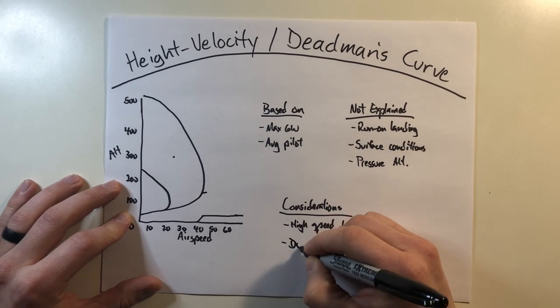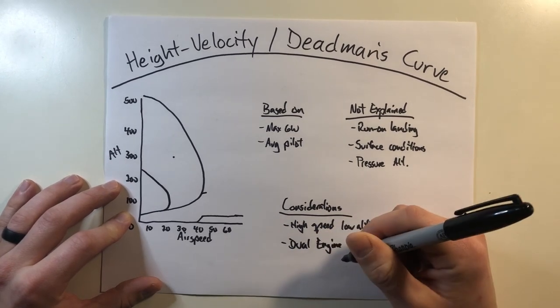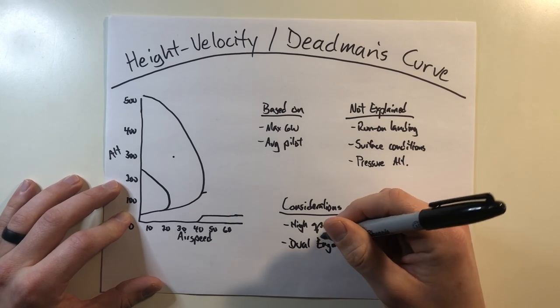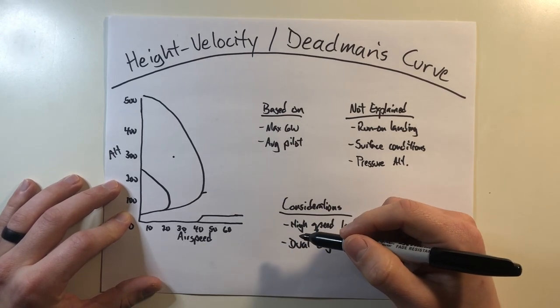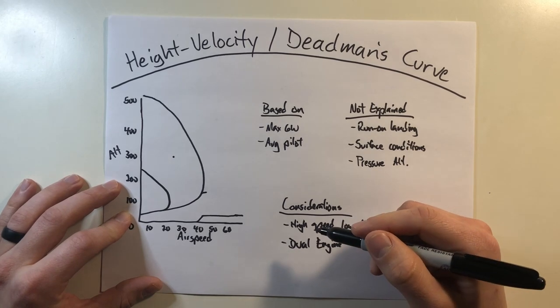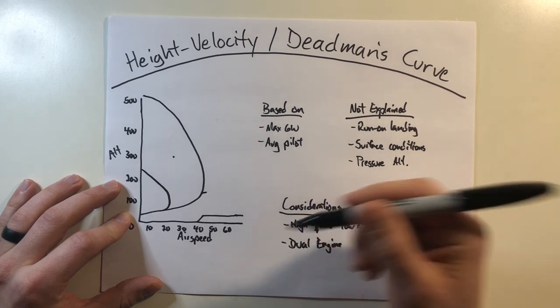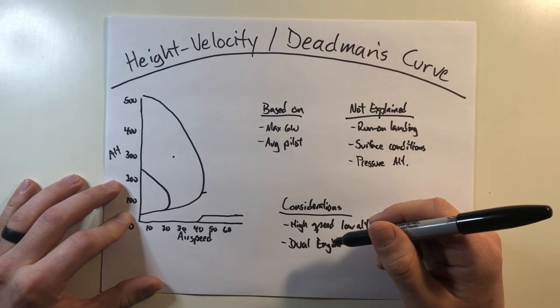So that covers the dual engine considerations. Last thing I want to cover for the considerations is that some federal regulations outline that intentionally operating in this avoid region is breaking an aircraft limitation and therefore should be avoided at all times. Now this usually applies to larger, heavier, multi-passenger helicopters and not so much your smaller commercial helicopters.